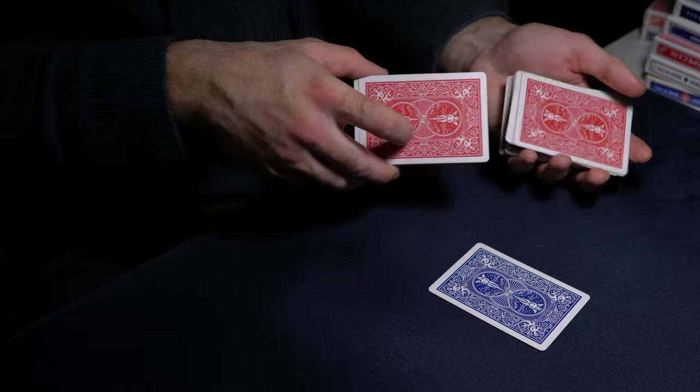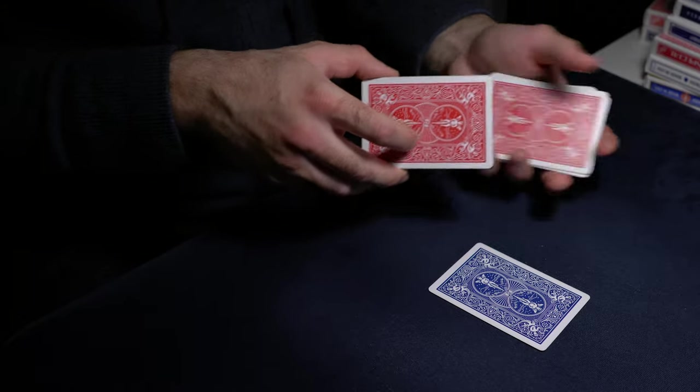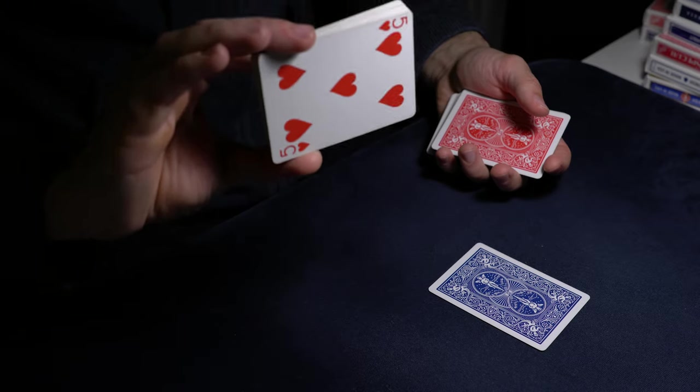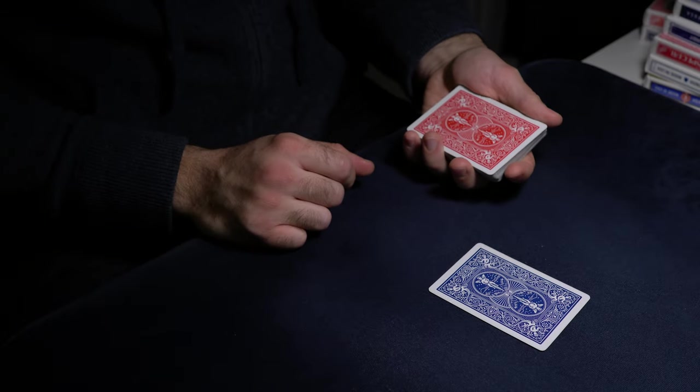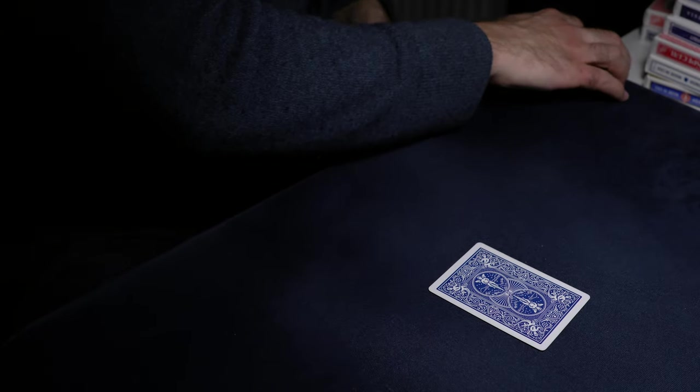So you start by cutting the cards. You ask them to call out stop as soon as they do. You show them the bottom card. Replace that and do the reveal one more time.